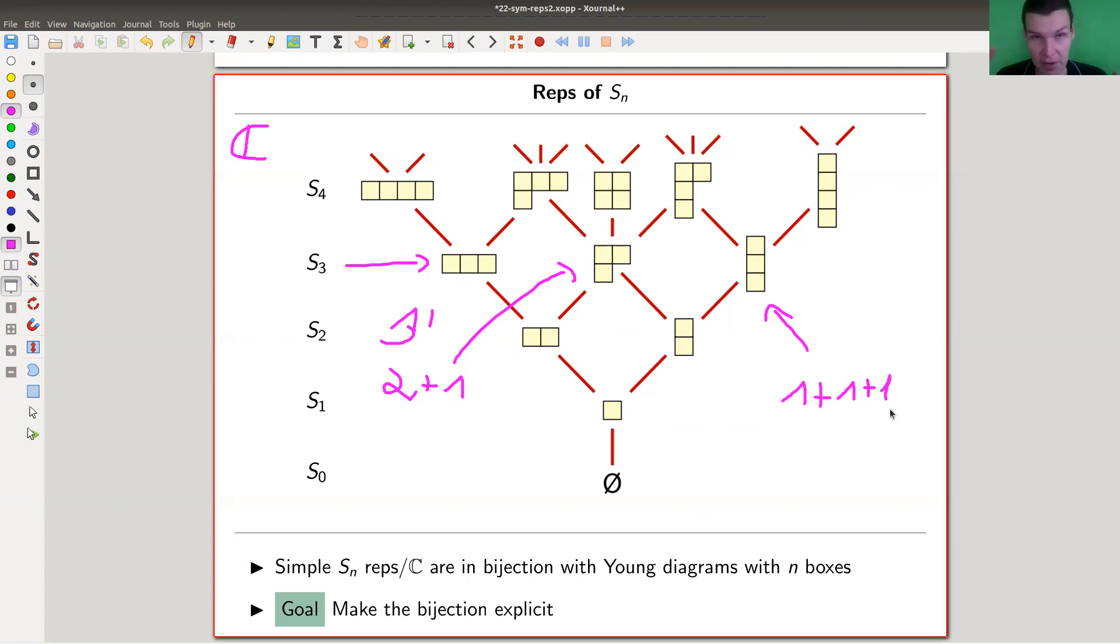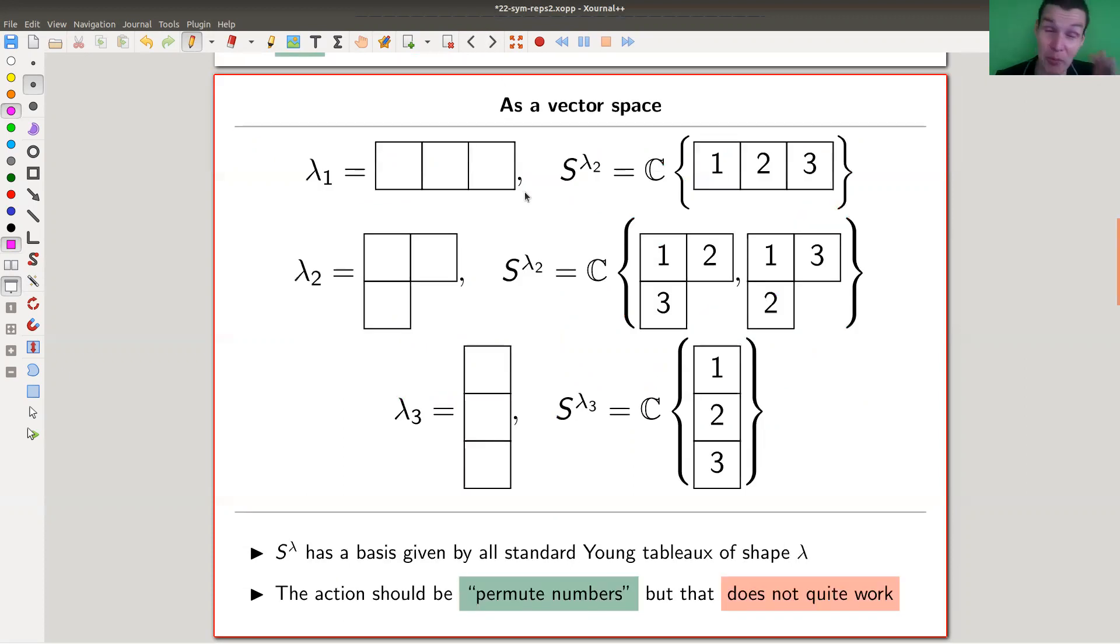But this is not as explicit as it should be. What we should do is construct an explicit representation associated to such a partition, to such a Young diagram. Because right now, we only know there's a bijection between two sets, but we don't know an explicit way of going from set A to set B.